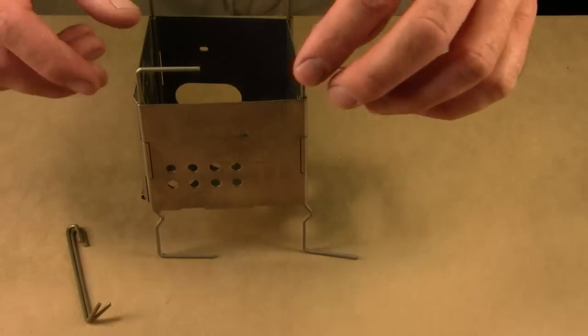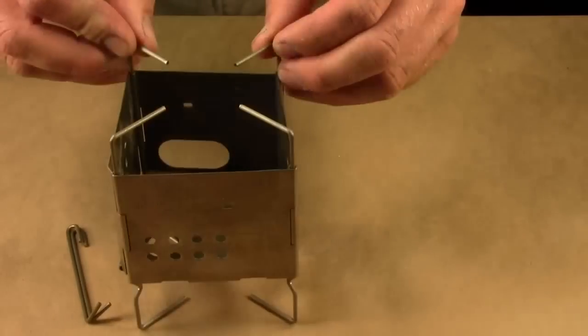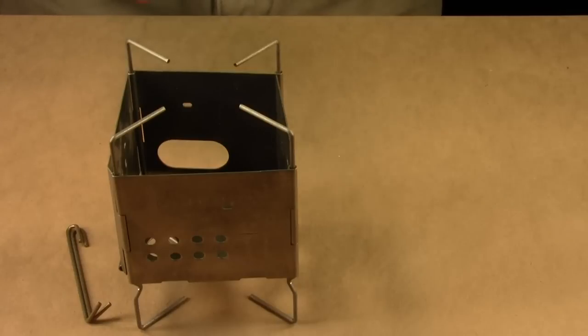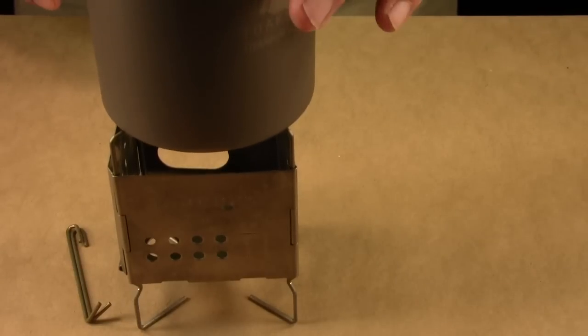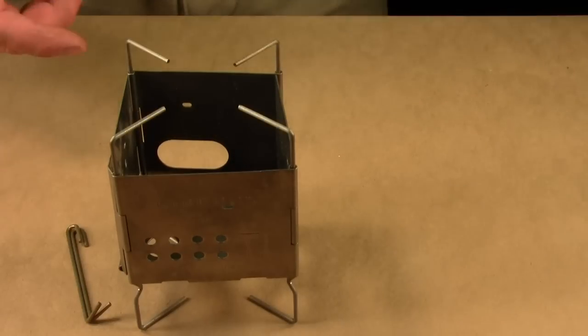There's no real assembly necessary. You just open it up and it drops in. So if you have a smaller pot or pan, you want to aim them inwards, and that will allow you to support a very small cup or a very small pot.